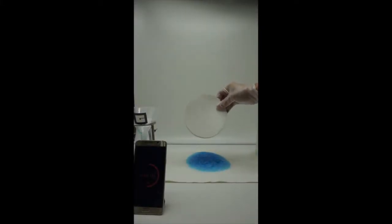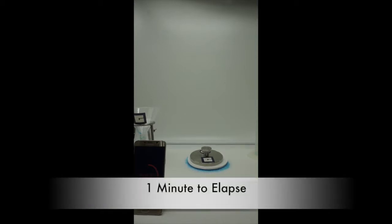After 1 minute elapses, a stack of fast absorbing filter paper is placed on top of the soiled region. A metal weight weighing 2 lbs is placed on top of the stack of filter paper to apply pressure.